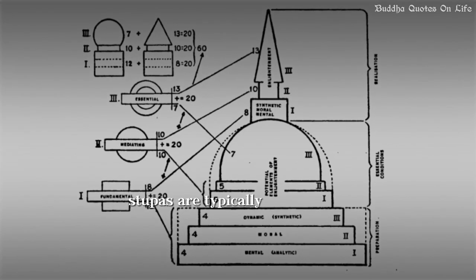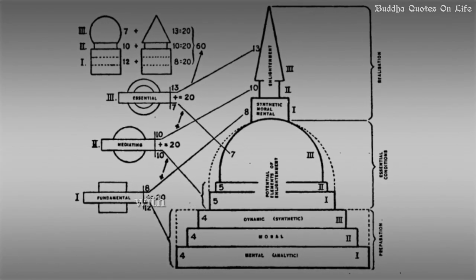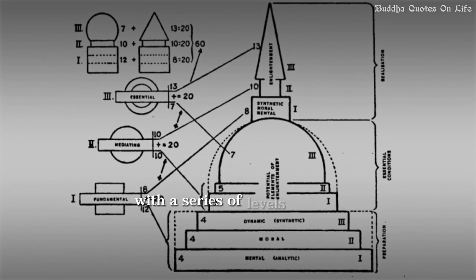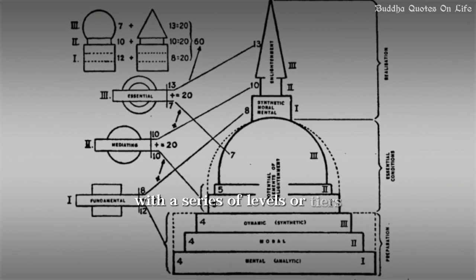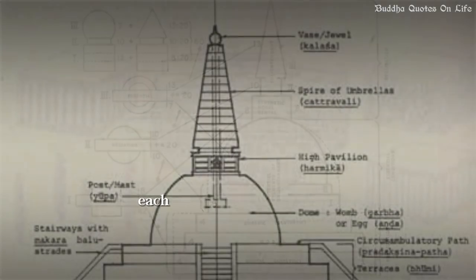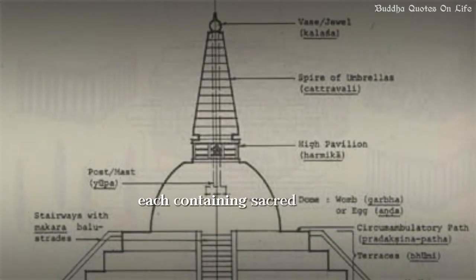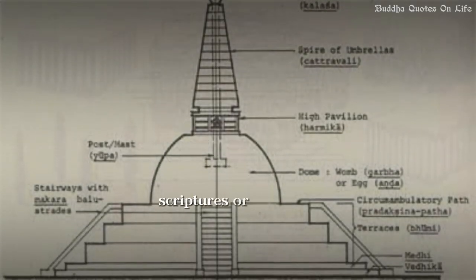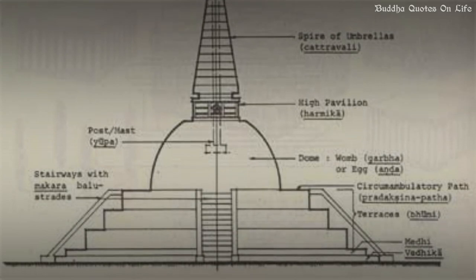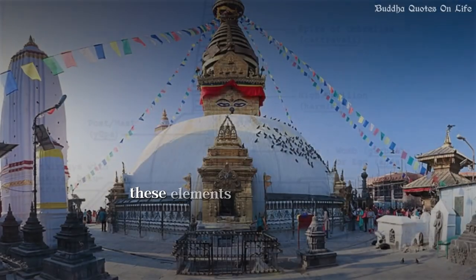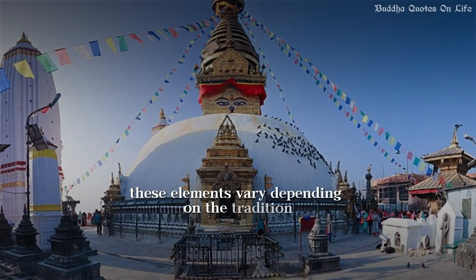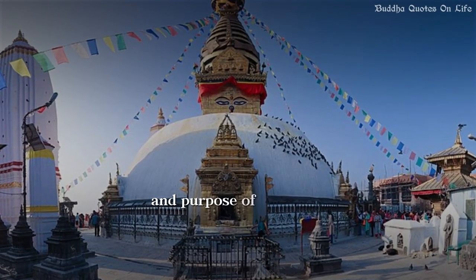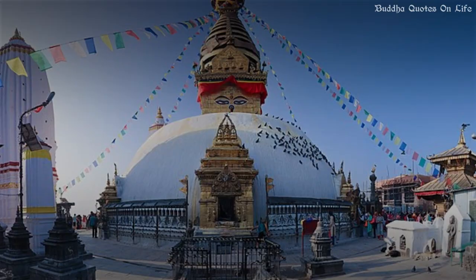Stupas are typically constructed with a series of levels or tiers, each containing sacred relics, scriptures, or offerings. These elements vary depending on the tradition and purpose of the stupa.